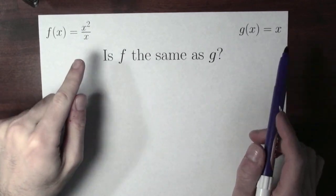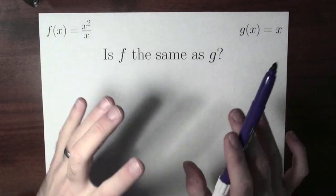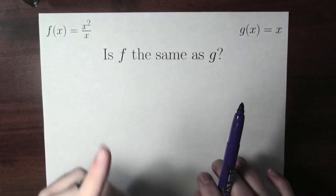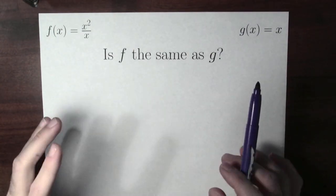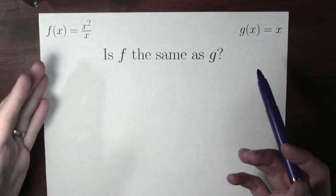Now, they're not the same rule. This is not the same as this. So it's a little bit more subtle. But that's okay. Two functions are the same if they have the same output for each input. So let's see if that happens here.